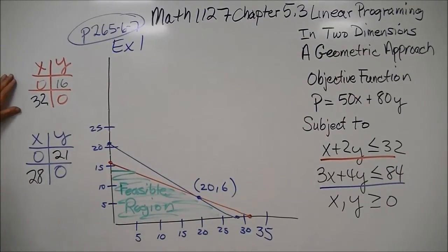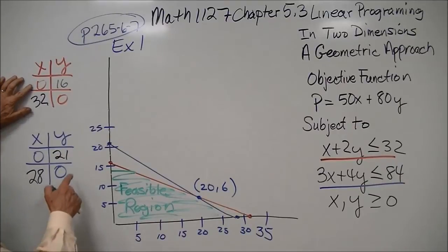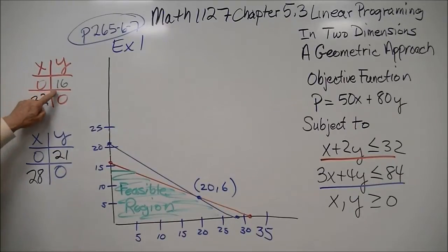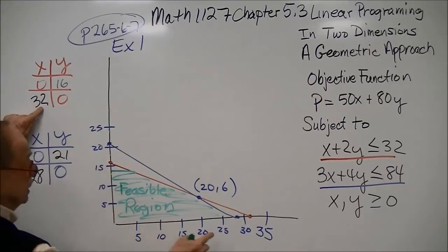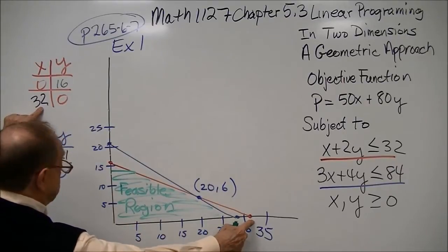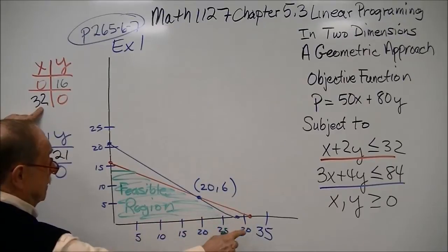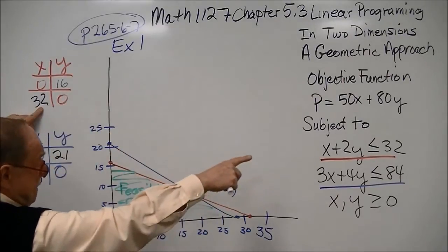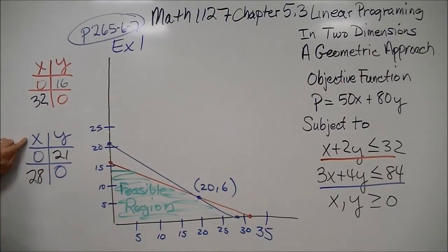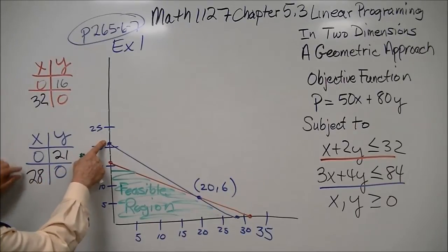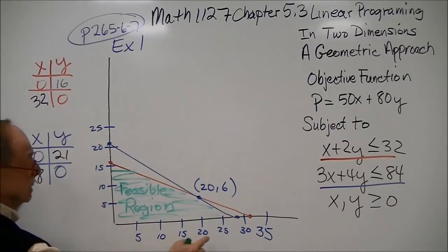By taking our points from the x and y intercept t-chart, we have here 0, 16, which is right there, going down to 32, 0, which is our red line. In our blue line, we have 0, 21 up here, going down to 28, 0.